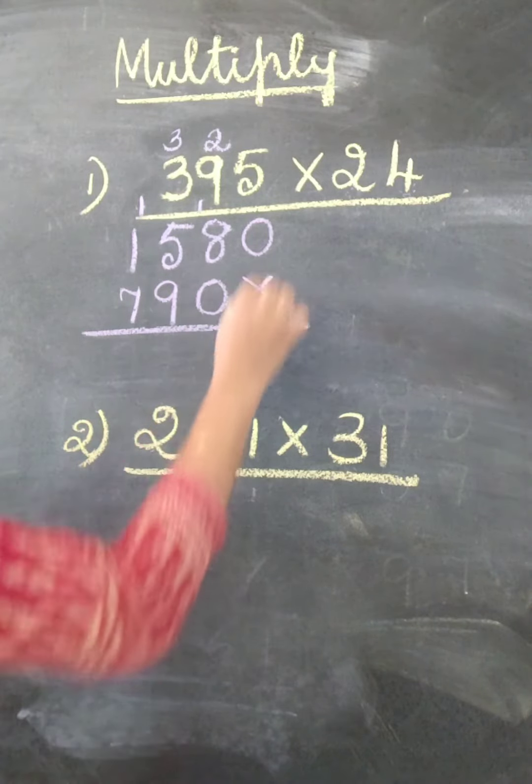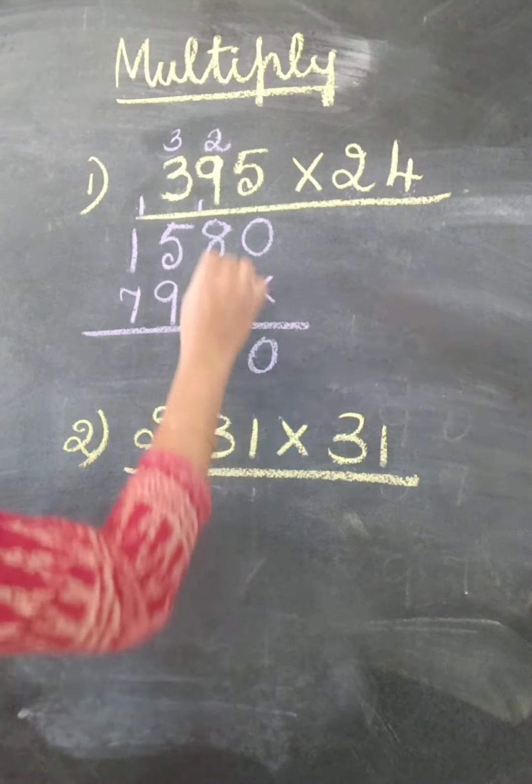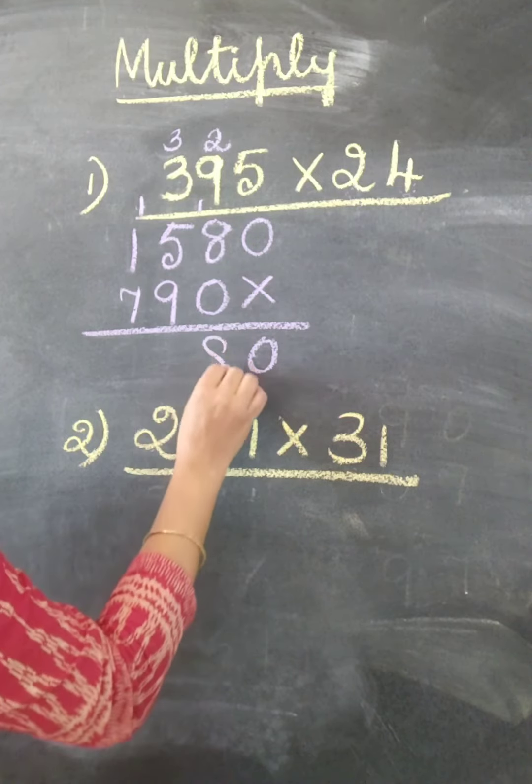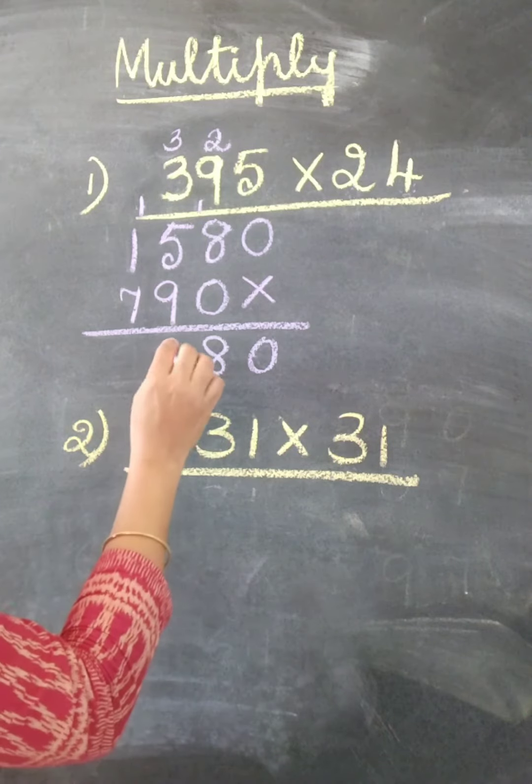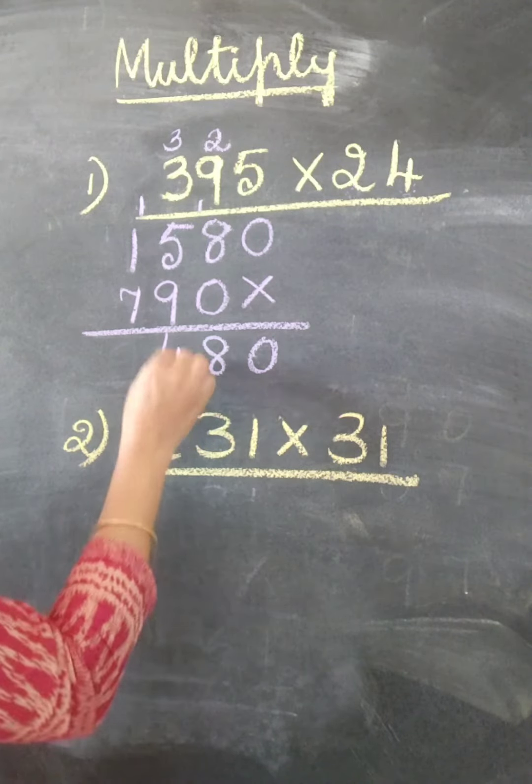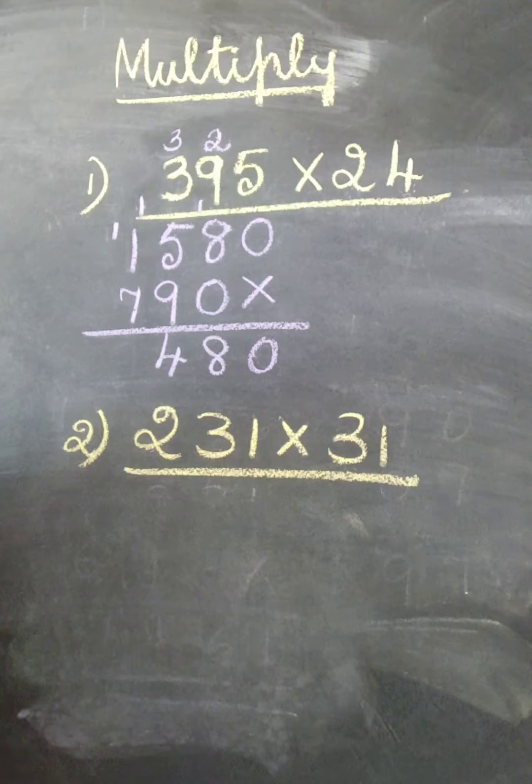Let us add this. 0. 8 plus 0 is 8. 5 plus 9. 5 plus 9 is 14. So write 4 here, 1 carry on to the next place.